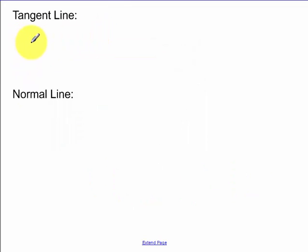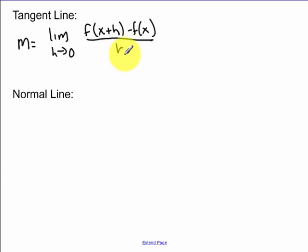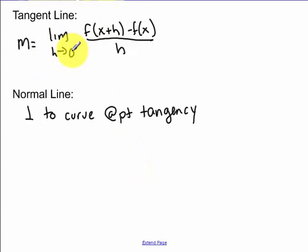So a tangent line, it hits at exactly one point, and the slope of that tangent line is a limit. That's why we learned limits, so we could get the slope of our tangent line. Now the normal line is perpendicular to our curve at the point of tangency. So you find your slope of your tangent line using this formula, and then you do the opposite reciprocal.